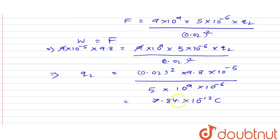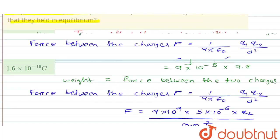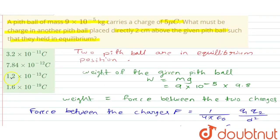The answer is 7.84×10⁻¹² coulomb. So the charge on the second pith ball will be 7.84×10⁻¹² coulomb, and our answer is option number 2.